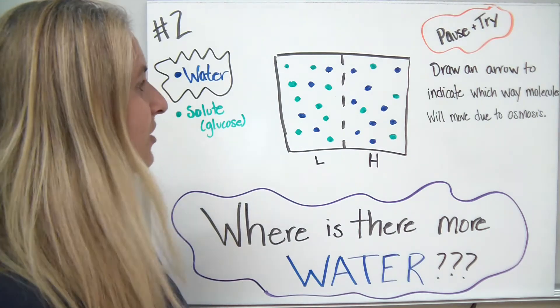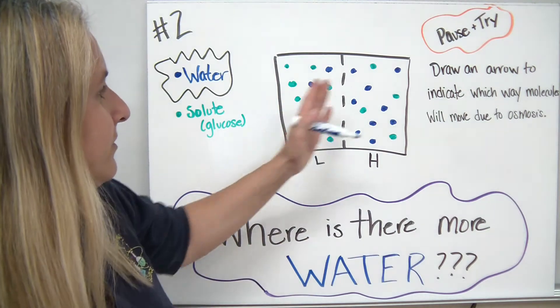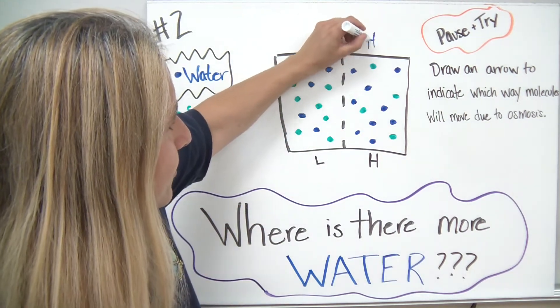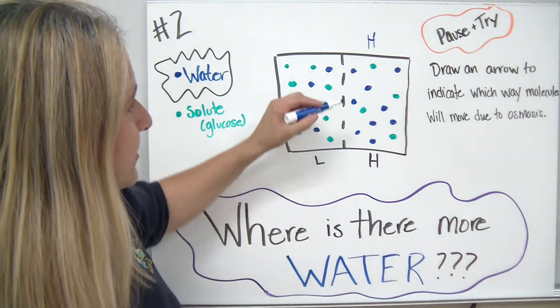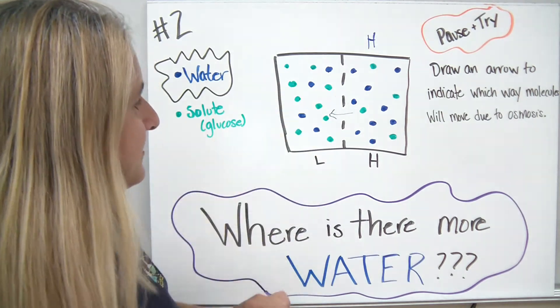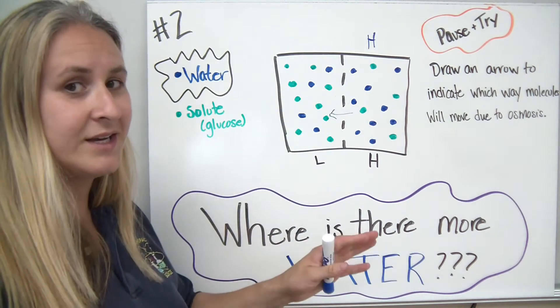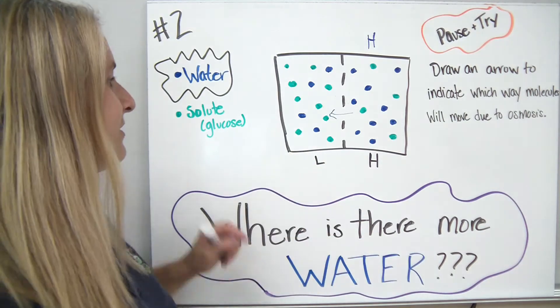Now that you paused and tried, where was there more water? Well, on the right-hand side was the greater concentration of water. So it's going to move from right to left again, from a high concentration to a low concentration.